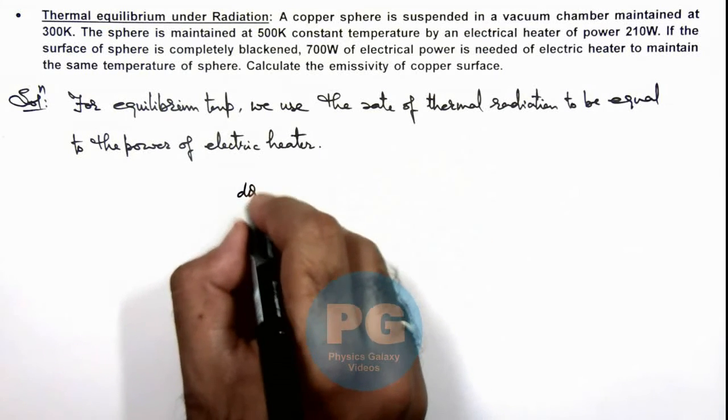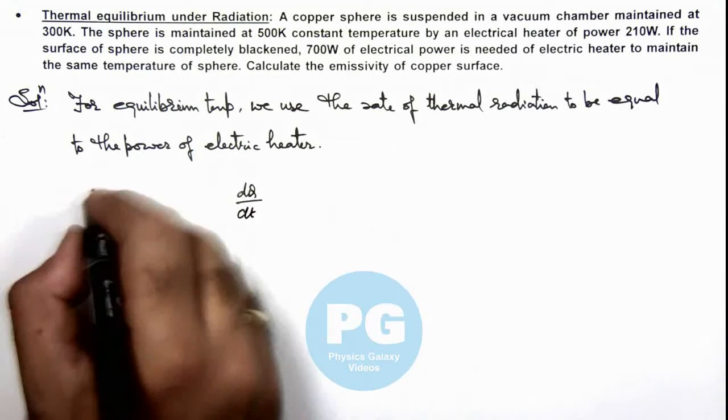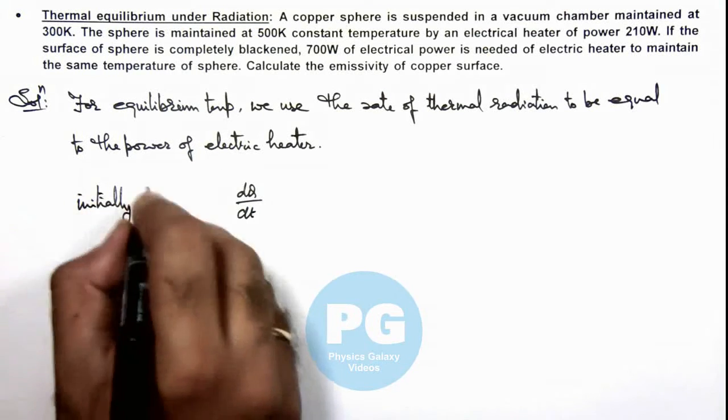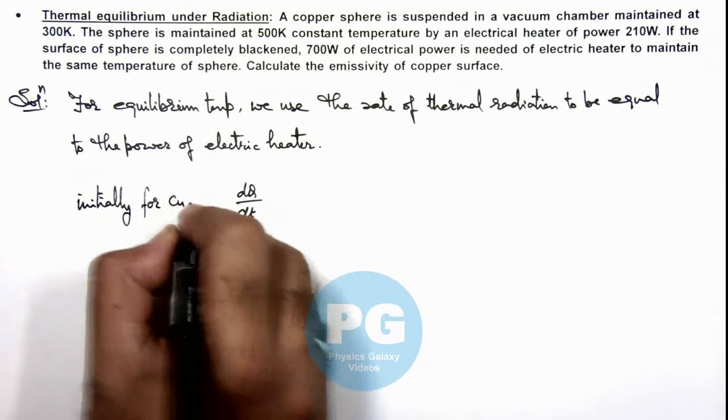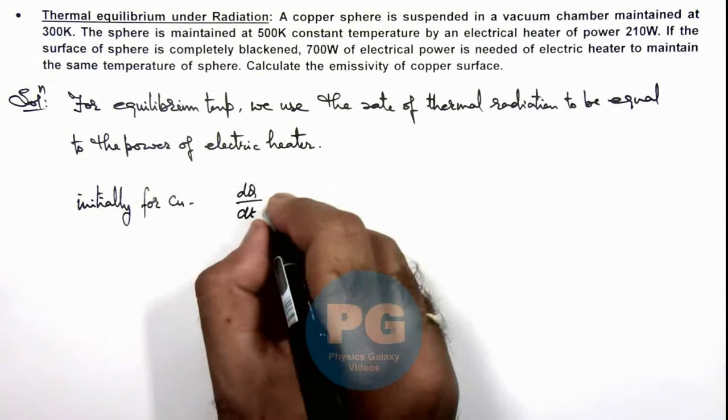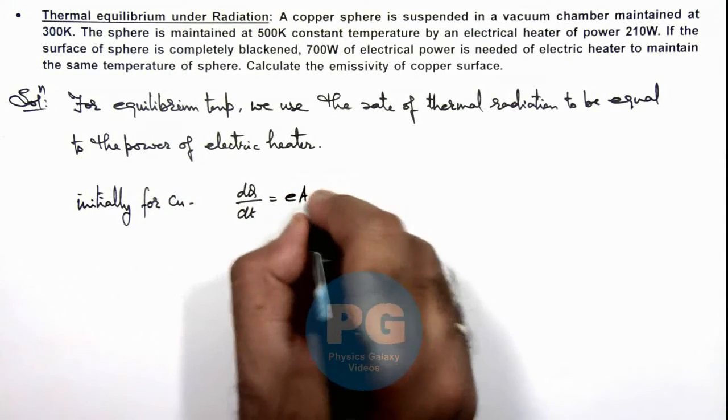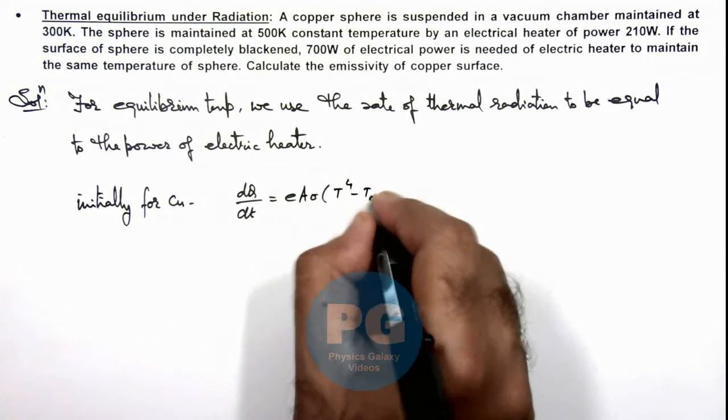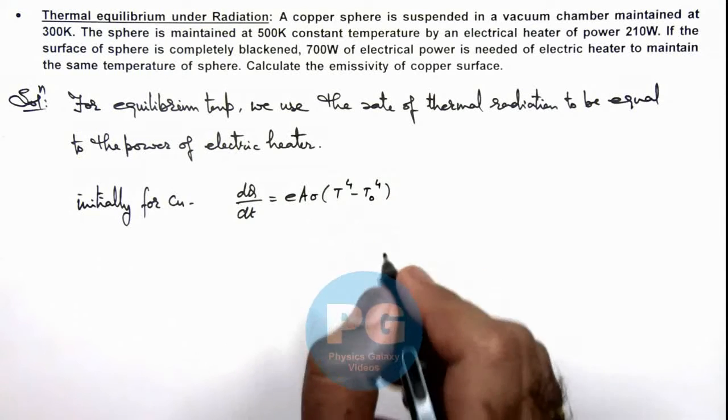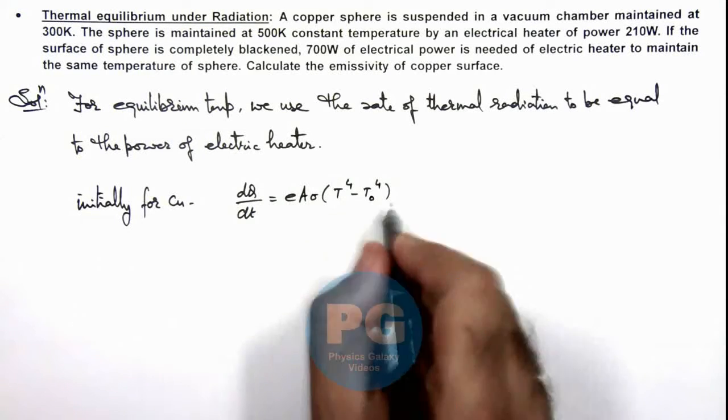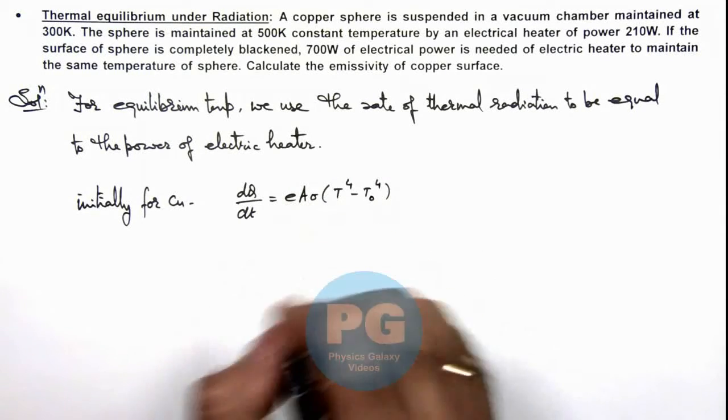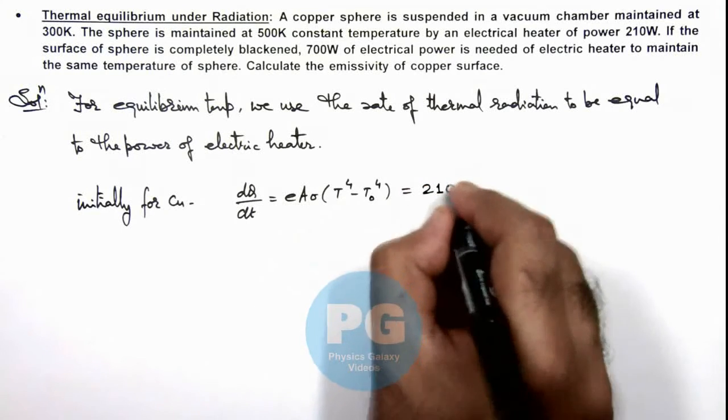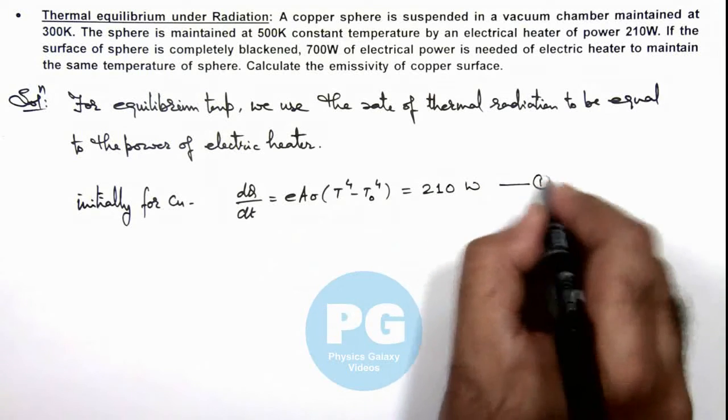So here we can write dQ/dt, which we can write initially for copper. We can write dQ/dt must be e·A·σ(T^4 - T₀^4). Here we can use for thermal radiation where e is the emissivity of copper surface, and we are given this is equal to 210 watts. This is equation 1.